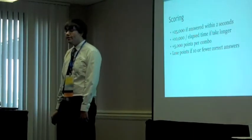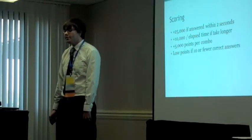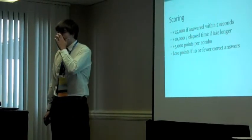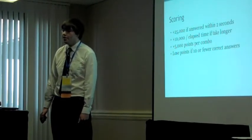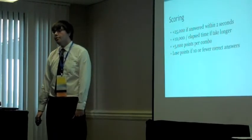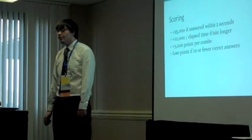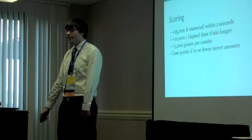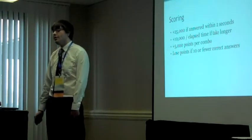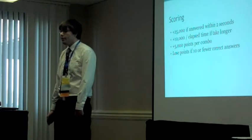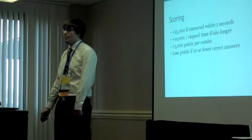For scoring, you get 25,000 points if you answer the question within two seconds. You get 10,000 divided by the amount of elapsed time if it takes longer. So if it takes 10 seconds to answer a question, you only get 1,000 points. But you also get combo points: if you get two questions right in a row you get 5,000, and if you get three you get an additional 10,000. You lose 10,000 points if you have 10 or fewer correct answers.